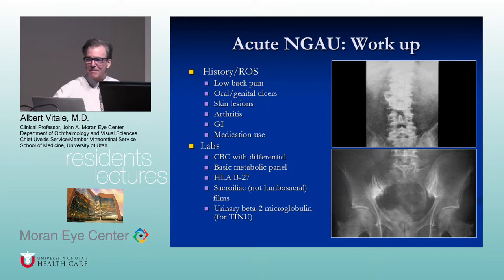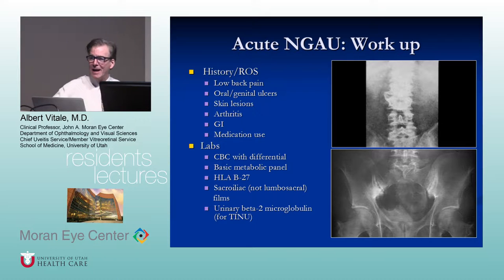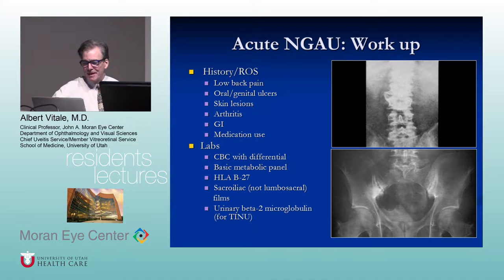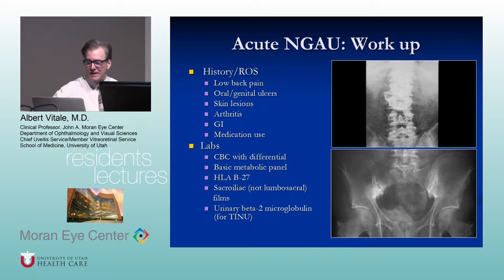If you're going to get films, lumbosacral films are not very helpful for ankylosing spondylitis because the action is in the sacroiliac joint. These days they probably get MRI rather than plain films. Urinary beta-2 microglobulin is actually a very good screening test for tubulointerstitial nephritis and uveitis syndrome, which is typically non-granulomatous but bilateral.